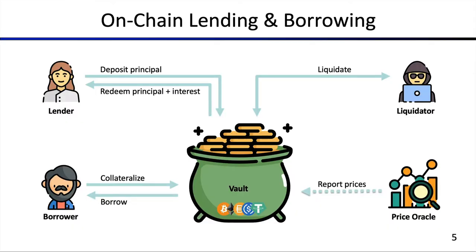Let's look at the on-chain lending and borrowing system architecture. You can see the following entities: a lender, a borrower, a liquidator, a price oracle, and a vault. The vault is a smart contract that manages financial assets among these different entities. The blockchain is great at managing assets without a trusted intermediary, and that's exactly what's happening here. The vault takes in various tokens — whether fungible or non-fungible — and for this example we have a few stablecoins representing US dollars.